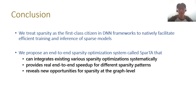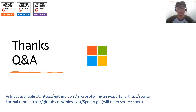In conclusion, we treat sparsity as the first-class citizen in DNN frameworks to facilitate efficient training and inference. We propose SPARTA, an end-to-end sparsity optimization system that integrates existing sparsity optimizations systematically and provides real end-to-end speedup for different sparsity patterns and models. SPARTA also reveals new opportunities for sparsity at the graph level. We are actively developing SPARTA, and the code will be released in the future.